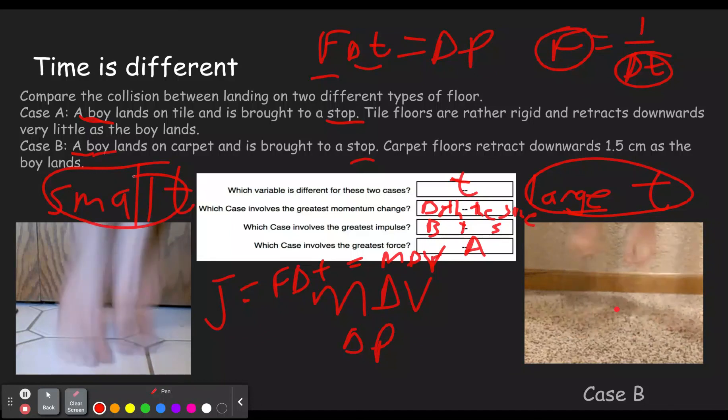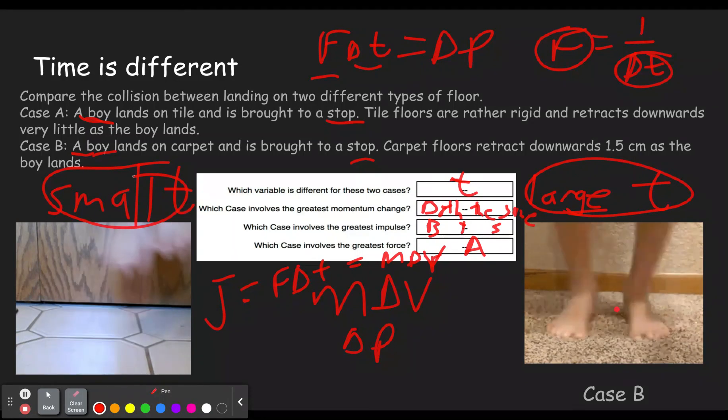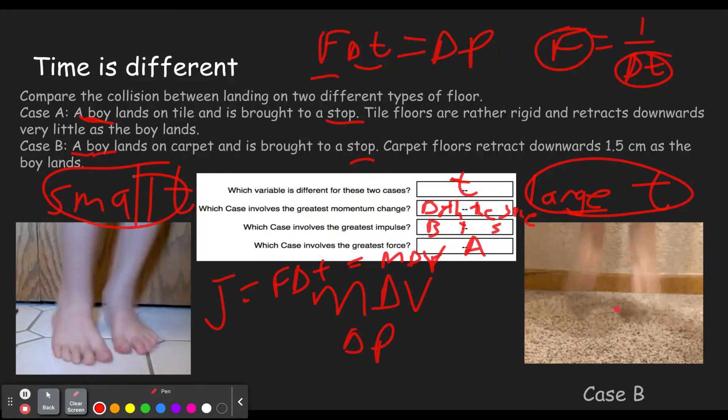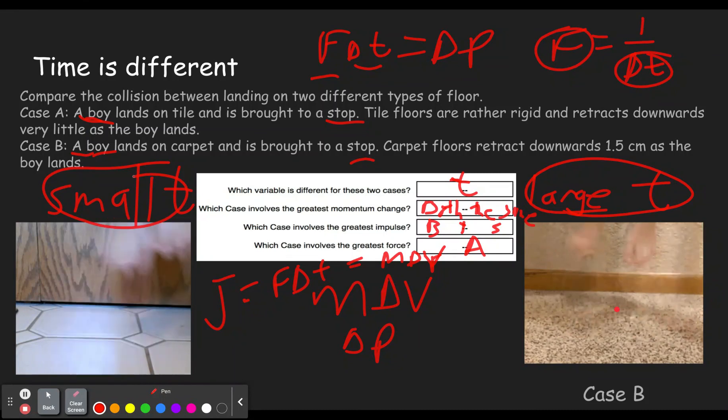All right. Those are really the two types of problems, either the change in velocity or mass are changing, like the first one I showed you, or the time of impact is changing. Enjoy puzzling out the concept builder. If you have any questions, please put those in the comments below. And if you enjoyed this video and learned a little about impulse and momentum, go ahead and click that like, and subscribe button, and we'll catch you the next time on the scientific adventures of Beard Man.